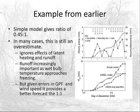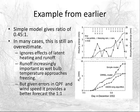Going back to the South Carolina example and removing the sleet portion, the ratio comes close to 0.45. But the simple model still overestimated the ASOS icing algorithm, because it ignores latent heat and runoff. Near 32 degrees, not all water hitting a wire will freeze — some will drip off. Runoff becomes increasingly important as wet bulb temperature approaches freezing. But given errors in QPF and wind speed, this still provides a much better forecast than using a 1:1 ratio for all events.